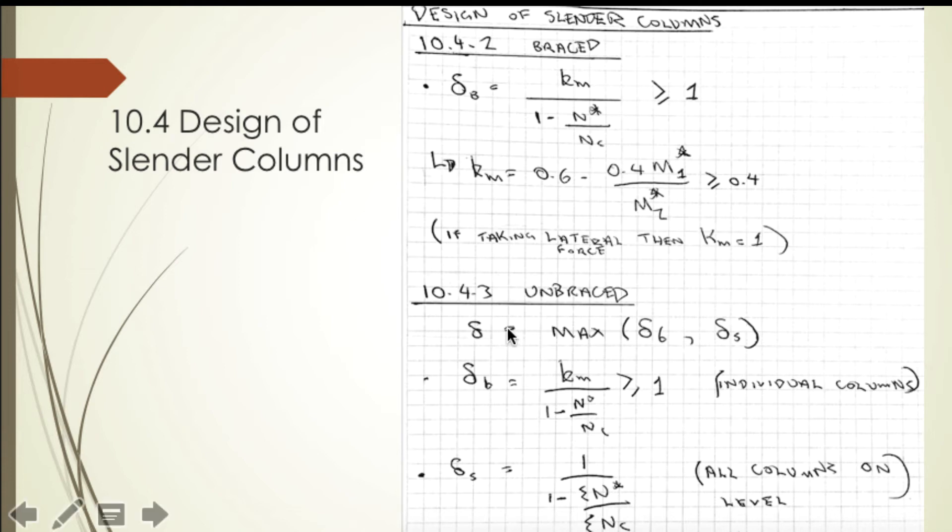Section 10.4.3 covers unbraced columns. This is the maximum of delta_b, which we previously calculated for braced, or delta_s. Delta_b takes into account the individual column, whereas delta_s takes into account how hard all the columns on the entire level are working. You take the greatest of these two values for the moment modification.